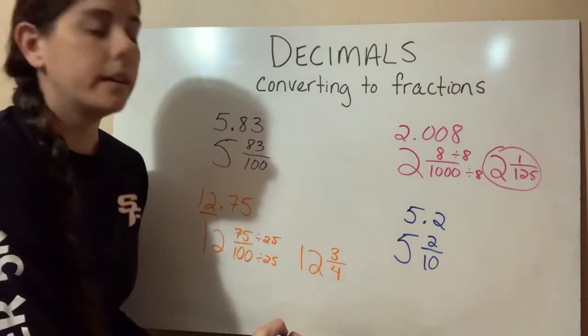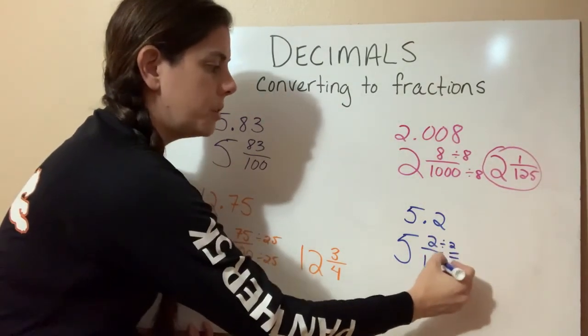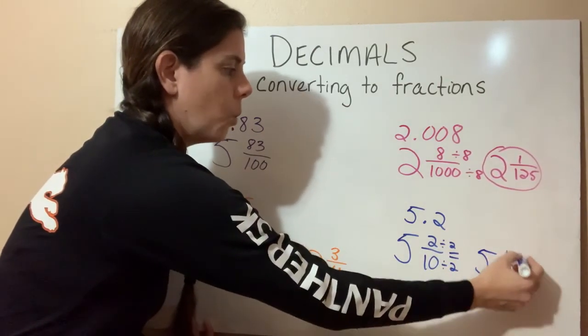And can we reduce that? Yes, we can. We can divide both of these by 2. And that will give us 5 and 1 fifth.